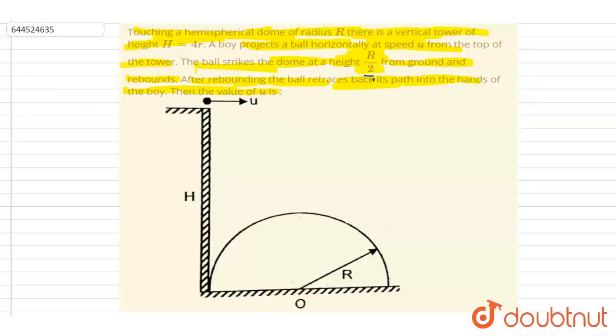So if you see, it strikes at a height of R by 2. If you see this distance, it is R by 2. You can see very clearly that this distance is R and this distance is R by 2. You can get this theta at which it will strike.